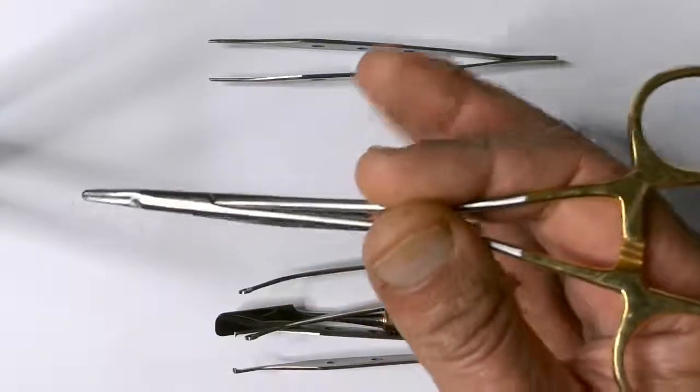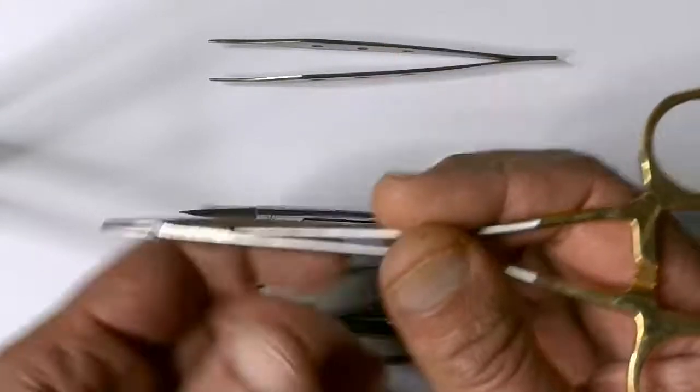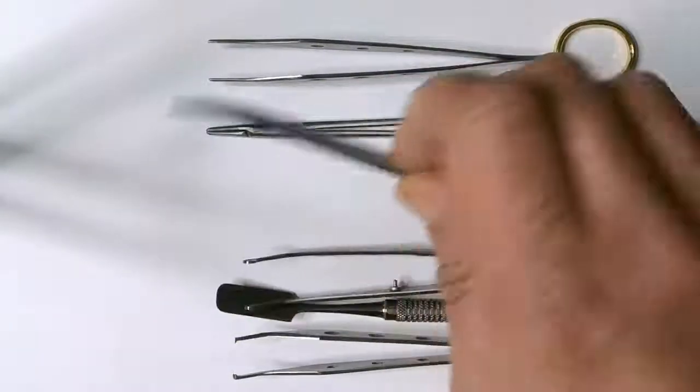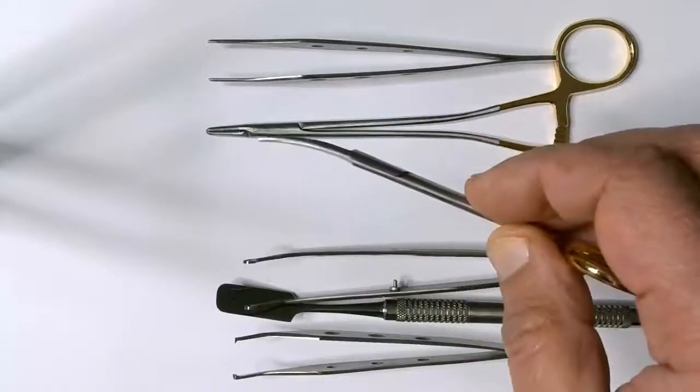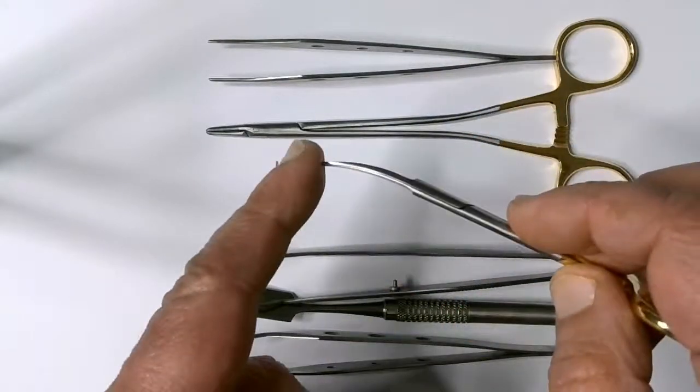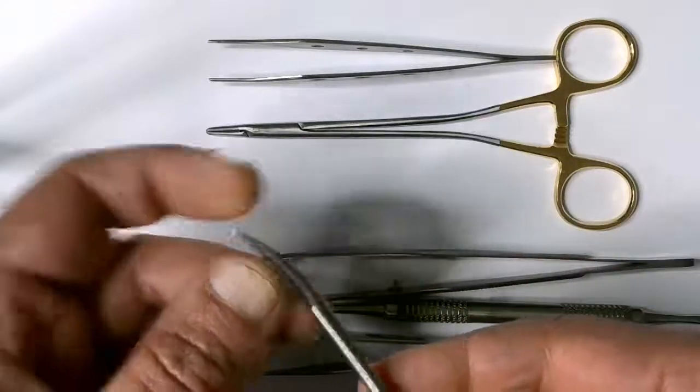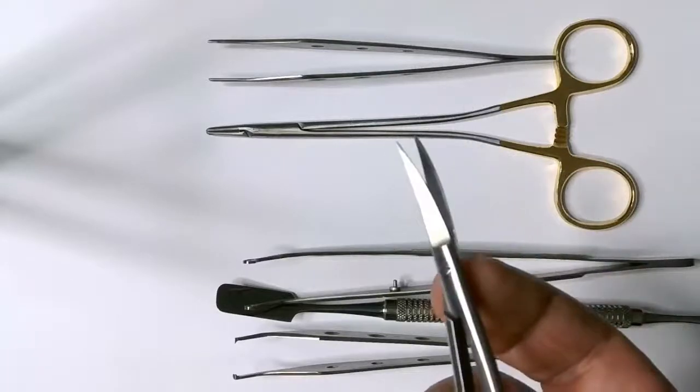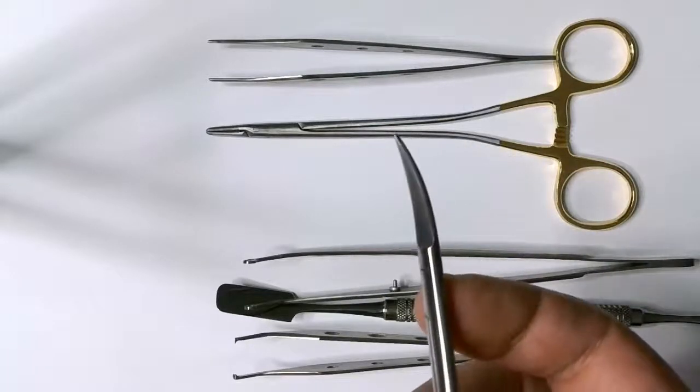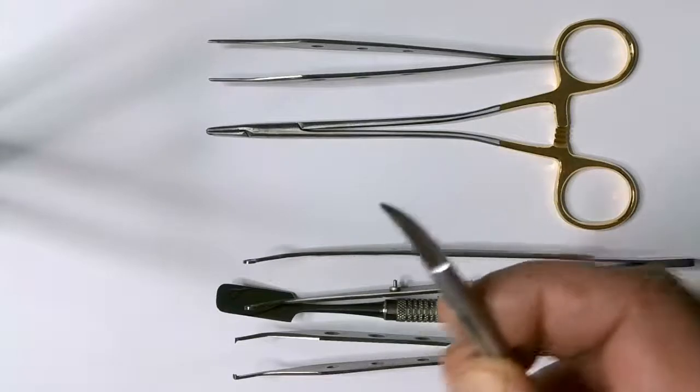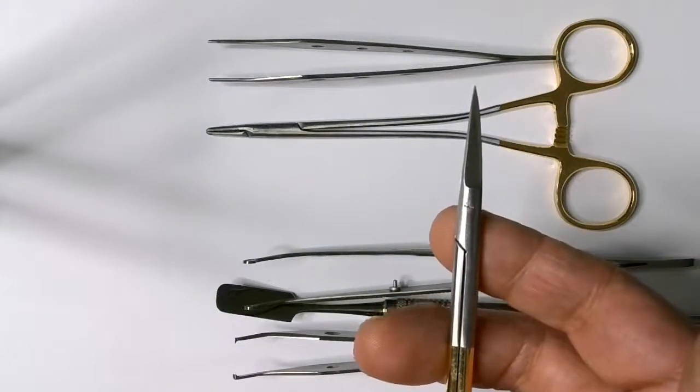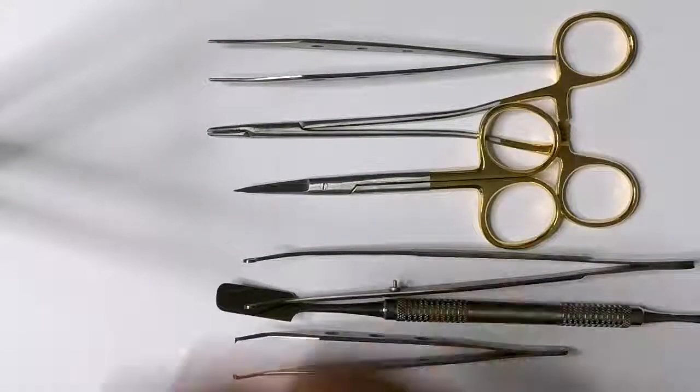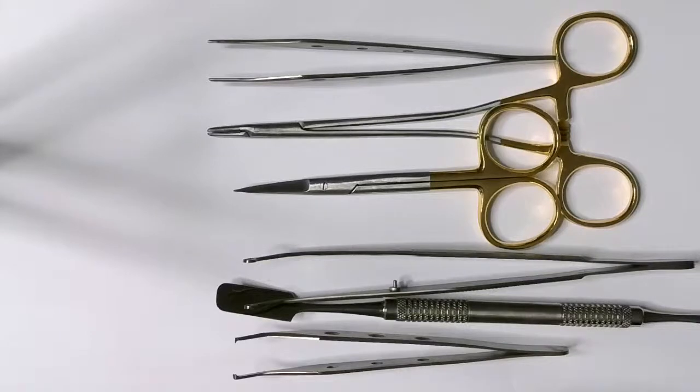So that's to hold the needle. Obviously some sharp scissors. I like the curved ones and they should cut with the end. There are certain ones which have a little notch at the end here to go under the suture and then cut it, and this is mainly for removing sutures rather than cutting the ends of sutures after you've finished off your knot and ready to cut the excess.